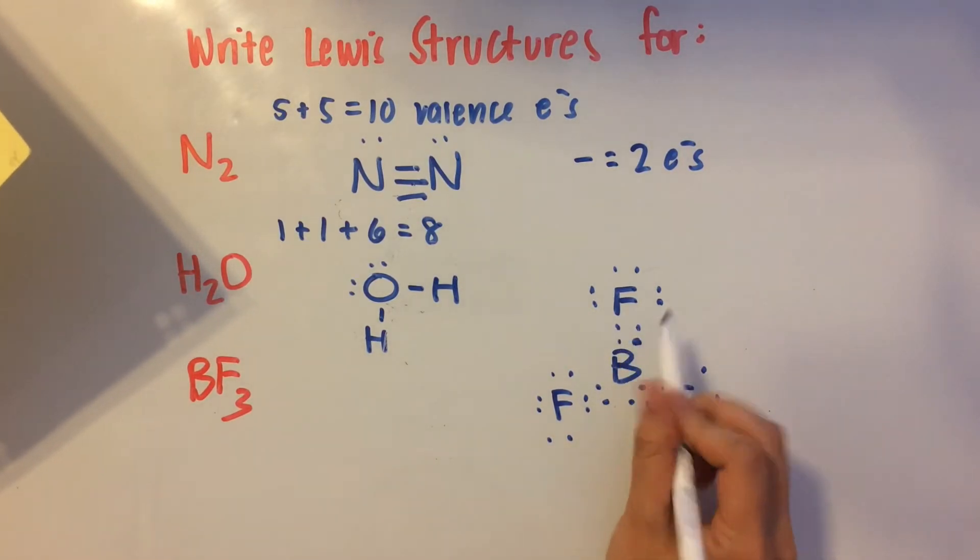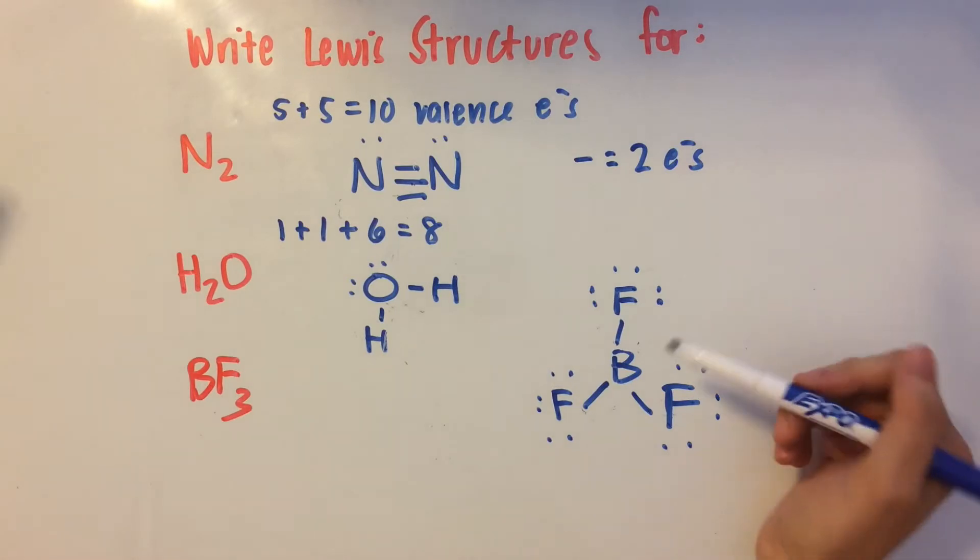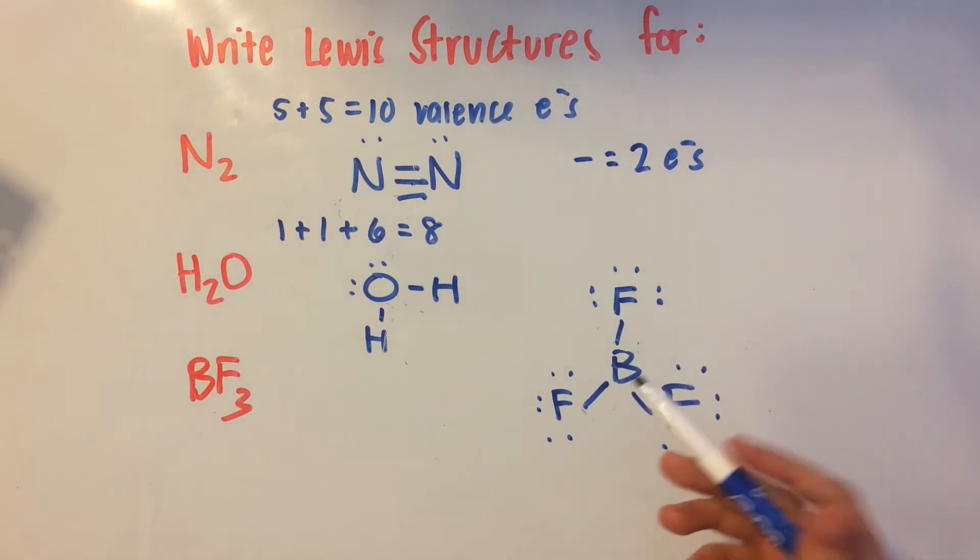So boron can have just six valence electrons. So I see this group of four here. Let's erase that. Make a line. This group of four. Make a line. This group of four. That's a really messy group of four. But, okay.